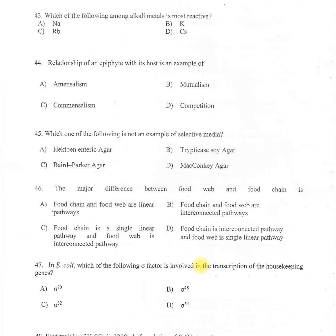Question 43: Which among the alkali metals is most reactive? Options: Na, K, Rb, Cs. The correct one is option D — Cs (caesium). Question number 44: The relationship of an epiphyte with its host is an example of — A: amensalism, B: mutualism, C: commensalism, D: competition. The correct one is option C. Epiphytes grow on other plants for physical support and cause no harm to the host plant; orchids are an example.